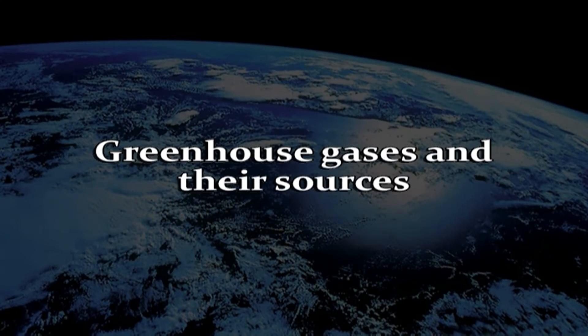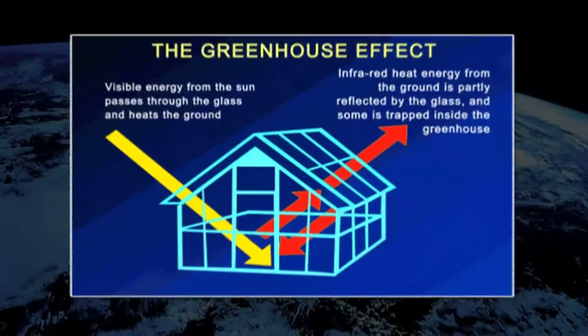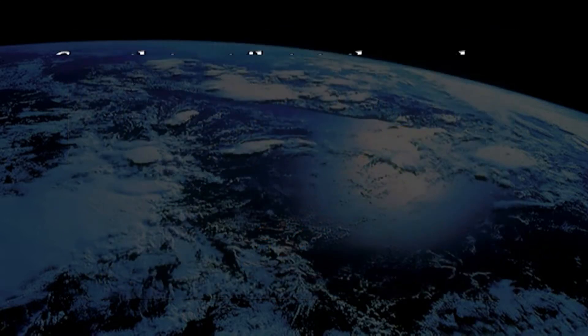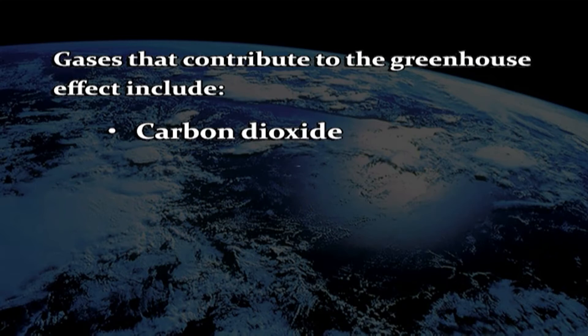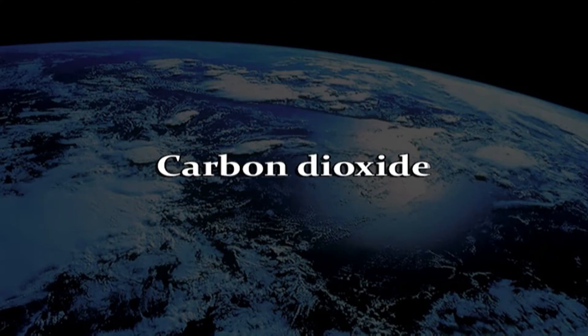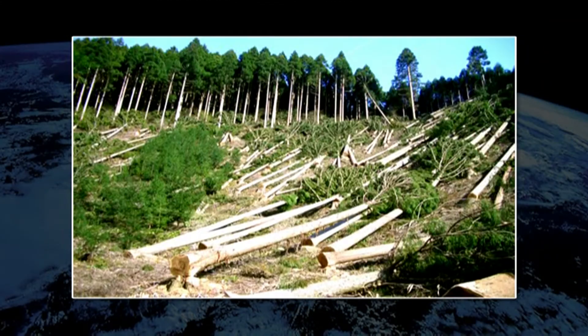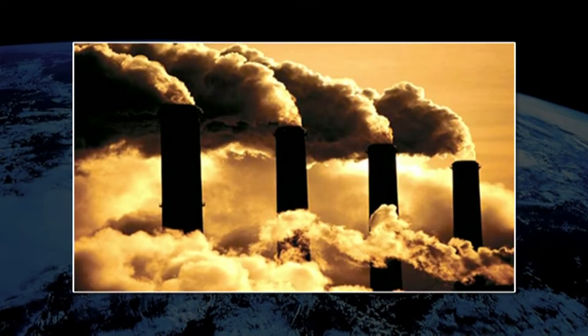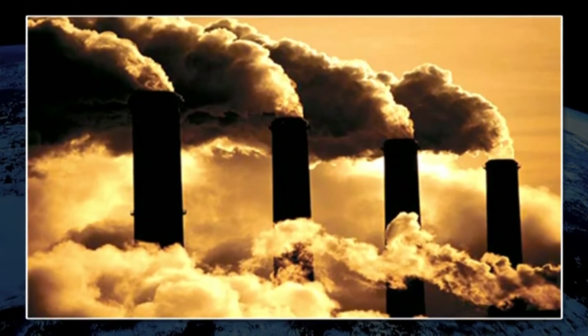Now coming to the greenhouse gases and their sources. Global warming results when certain gases in the atmosphere block and trap heat radiating from earth towards space. Gases that contribute to the greenhouse effect include carbon dioxide, nitric oxide, methane and chlorofluorocarbons. Changes in land use patterns, deforestation, land clearing, agriculture and other activities have all led to a rise in the emission of carbon dioxide. Over the last century, the burning of fossil fuels like coal and oil has increased the concentration of atmospheric carbon dioxide. The coal or oil burning process combines carbon with oxygen in the air to make carbon dioxide.